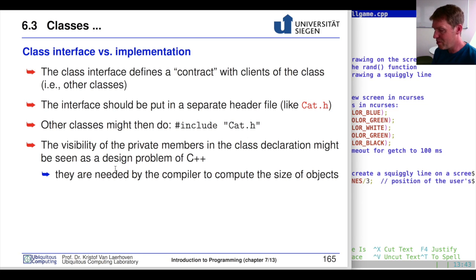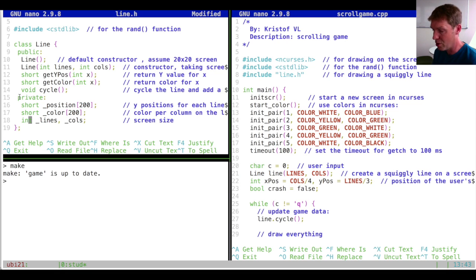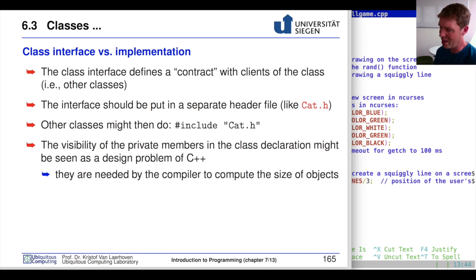The visibility of private members in the class declaration might be seen as a design problem of C++, because private things are still visible even though users can never access them. This is why we tend to put private data members at the end — the first thing people should see when reading the class are the public parts. However, the compiler needs the private members in the header because it uses them to determine how much memory to reserve for an instance of the class.